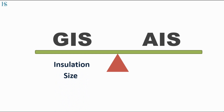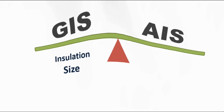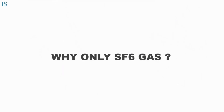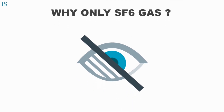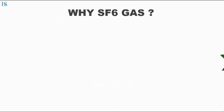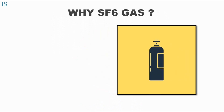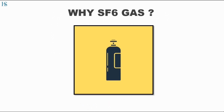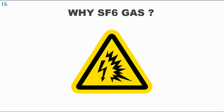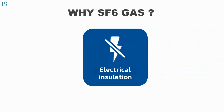So now why have we moved from AIS to GIS? This is because of the reduction in size by approximately 70% in GIS. Why only SF6 gas? SF6 gas exhibits properties such as it is colorless, odorless, non-toxic, and an inert gas which means it does not react with any metal. It has excellent arc-quenching properties and it works as a good electrical insulator.